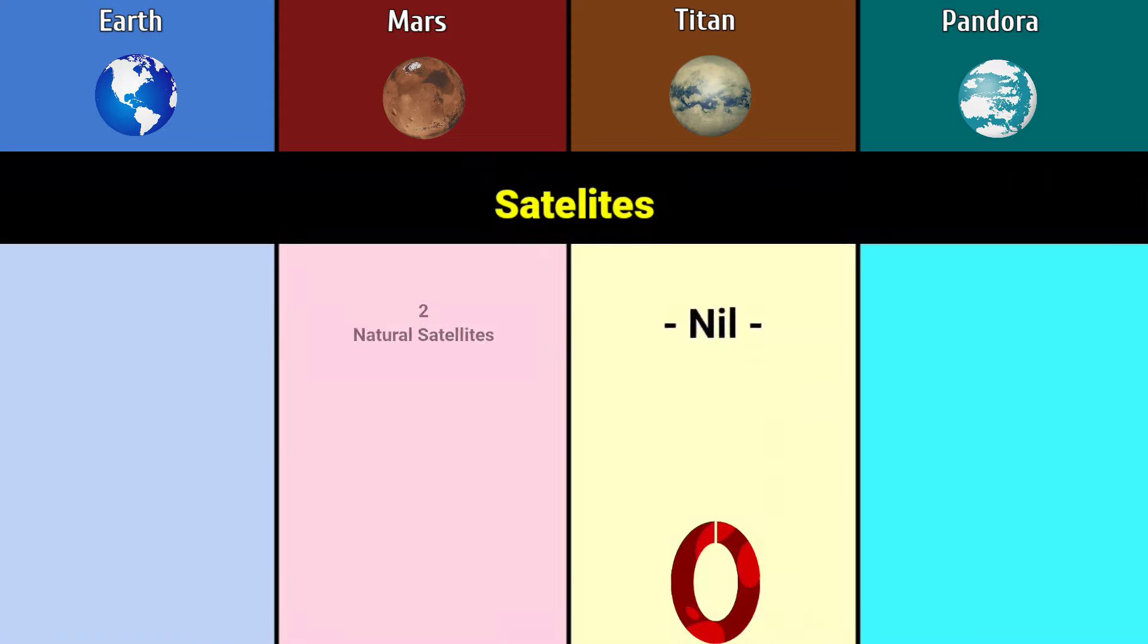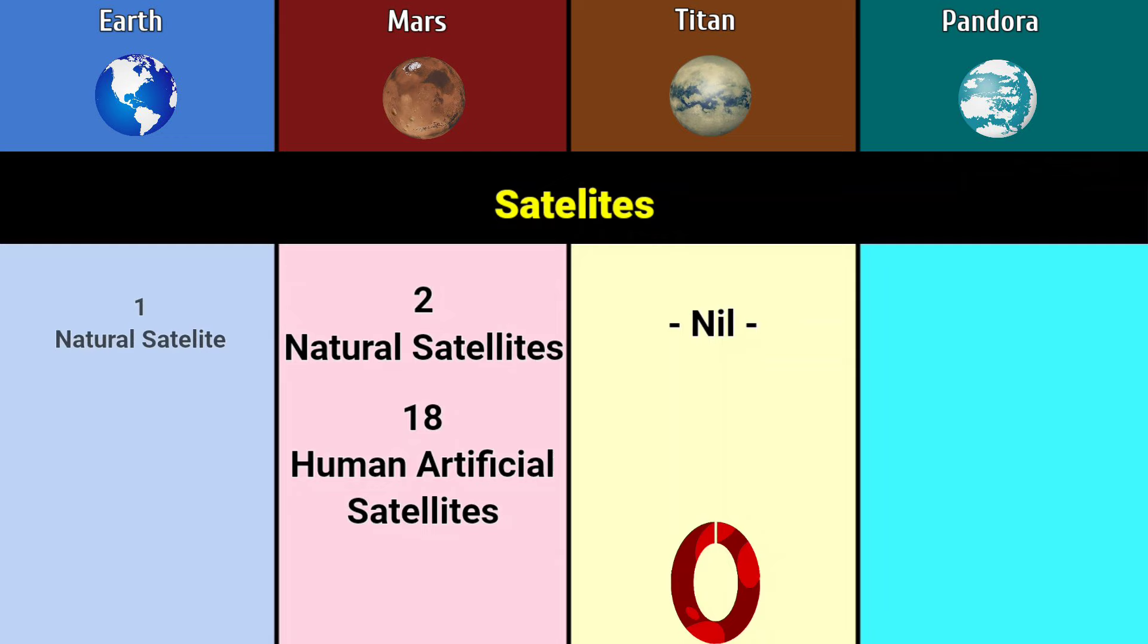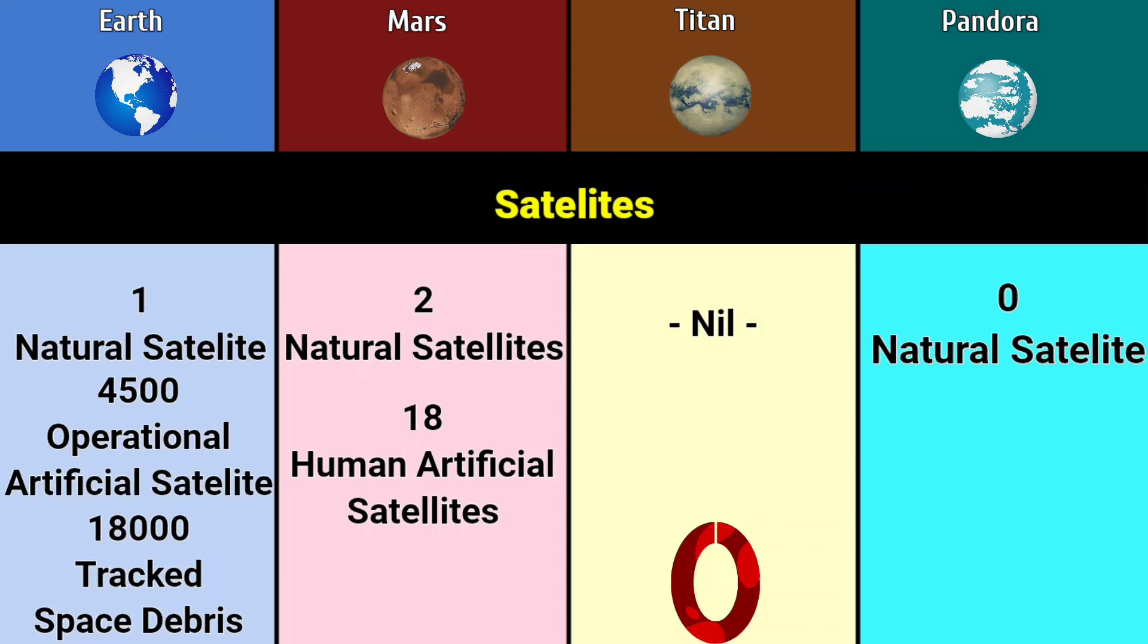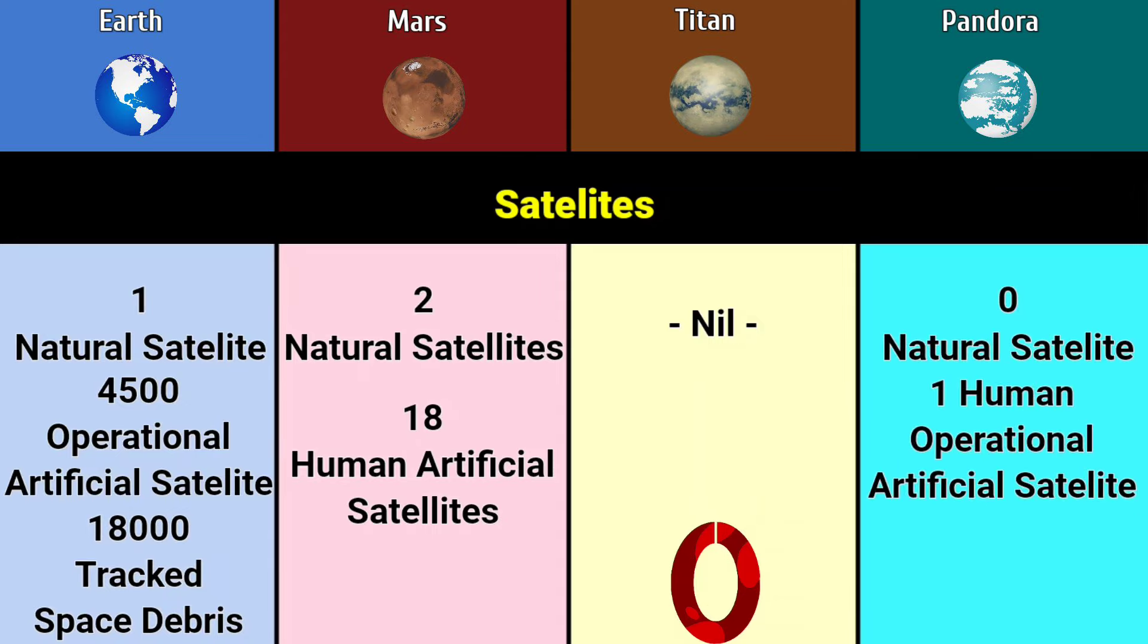Satellites: Earth has 1 natural satellite, 4,500 operational artificial satellites, 18,000 tracked space debris. Mars has 2 natural satellites, 18 human artificial satellites. Titan has 0 natural satellites, 1 human operational artificial satellite. Pandora has 0.